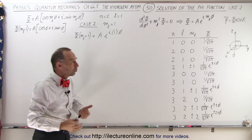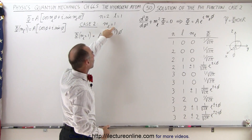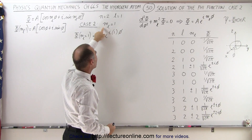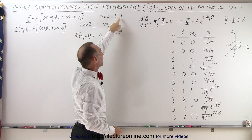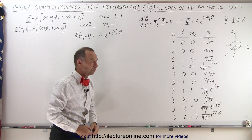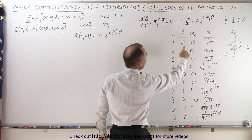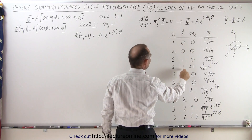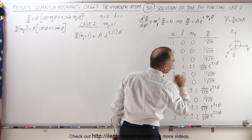What we're going to do now is do Case 2, where we have m sub l equal to 1. In Case 1, we had m sub l equal to 0, which requires that l is equal to 0, and if l is equal to 0, then n must be at least equal to 2. So now we're going to look at the case where m sub l is equal to 1 and l is equal to 1.